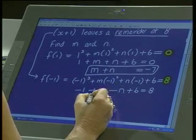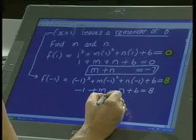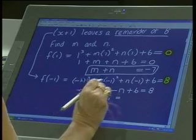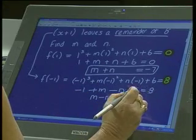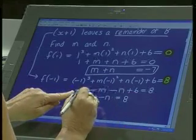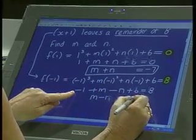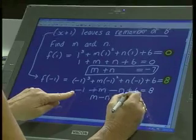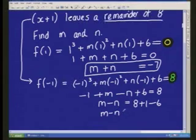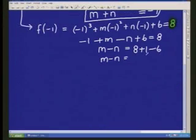Now let's tidy this up. Negative 1 cubed is negative 1. Negative 1 squared is positive 1 times m is just m. Then we get negative n plus 6 equals 8. So that's just getting rid of all the brackets, cubing them out and squaring them out. You following me? So now we're going to get m minus n equals, transpose the 8 to the other side. So what is that going to become? Positive 1 and then minus 3. So I'm going to get 3.